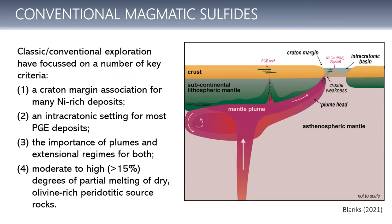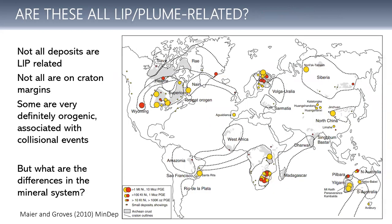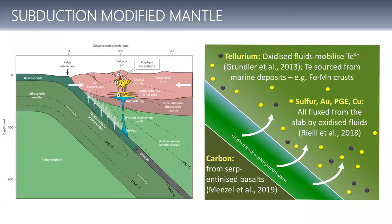But putting up a map of all the magmatic sulfide deposits, not all of them are plume-related, not all of them are on kraton margins, and some of the ones that are on kraton margins may not be plume-related. In fact, quite a lot of them are actually orogenic. And some of those orogenic ones might actually now be on kraton margins — so looking at you, Nova Bollinger. Some of the ones mentioned in the last couple of days, the ones in the Central Asian orogenic belt, parts of some of the Finnish nickel belts, Aquablanca and others — these are more collisional belt systems.